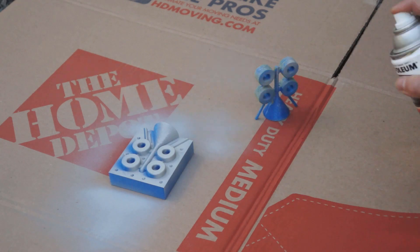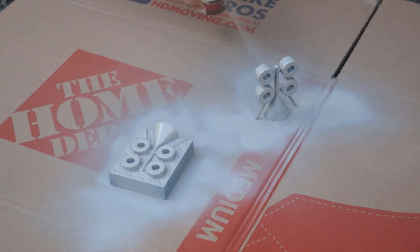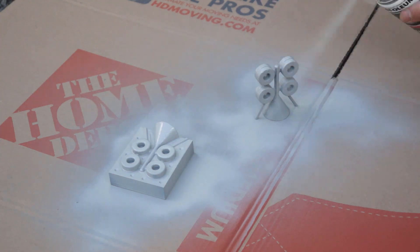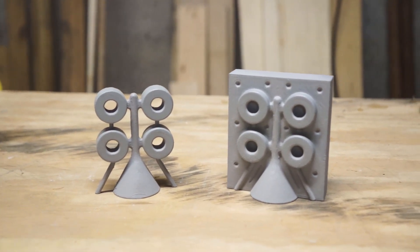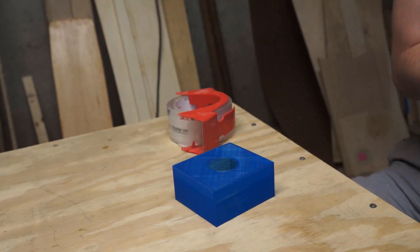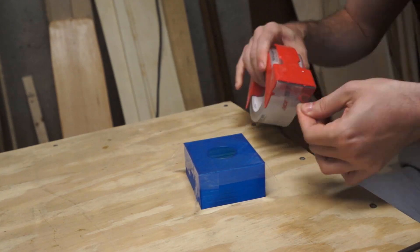Then I hit them with a few coats of primer to help fill in the layer lines from printing. And here they are. The walls of the casting box were really thin and I was worried about leaks, so I used some packing tape to wrap it up just to keep it sealed.